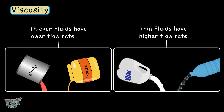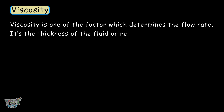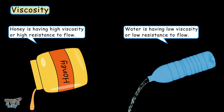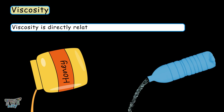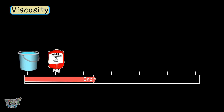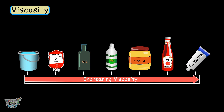But what exactly is viscosity? It is one of the factors which determines the flow rate. It is the thickness of a fluid or the resistance of the fluid to flow. For example, honey has a high viscosity or high resistance to flow, and water has a low viscosity or low resistance to flow. So viscosity is directly related to the thickness of the fluid. In order of increasing viscosity: water has the least viscosity, then blood, olive oil, glycerin, honey, ketchup, and toothpaste has the highest viscosity. The higher the thickness, the higher the viscosity.